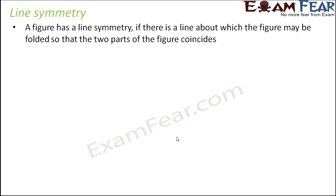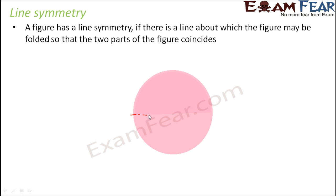Let us take the example of a circular sheet of paper. In this sheet of paper, if you draw a line exactly at the center and then fold the paper along this line, you see that this half and this half — these two halves, being exactly identical — completely coincide with each other.